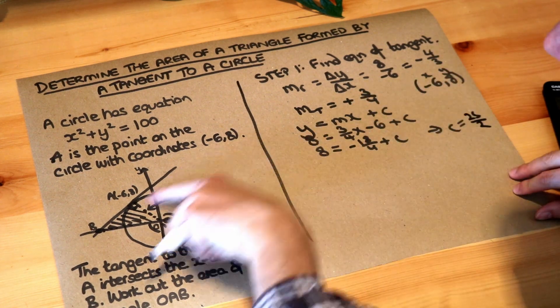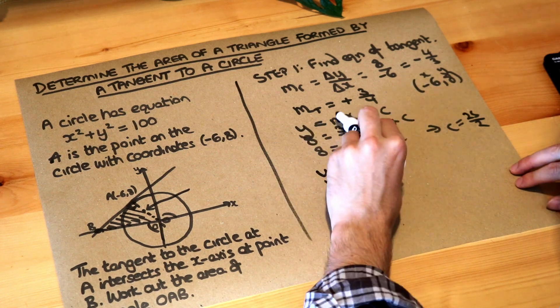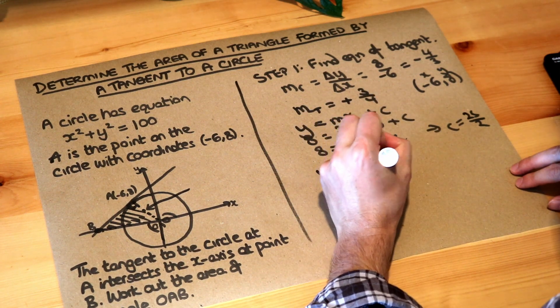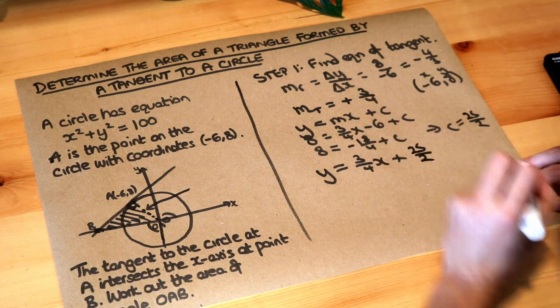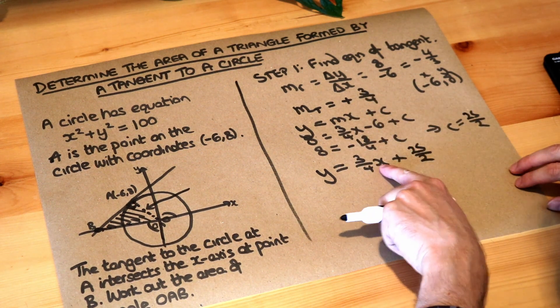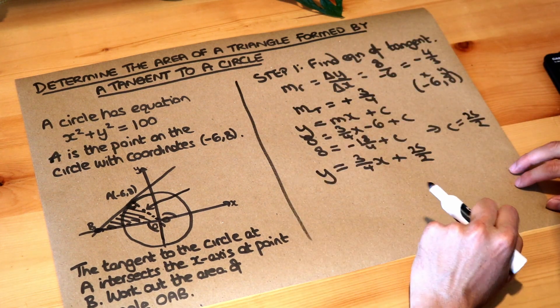So we now know the equation of this line here. It's y equals mx, we know the gradient is three-quarters, so y equals three-quarters x plus c, and we know the c is 25 over 2. Remember, it's an equation of a line, we still have to leave x and y as variables, otherwise you couldn't get different points on the line. So we've done step one.